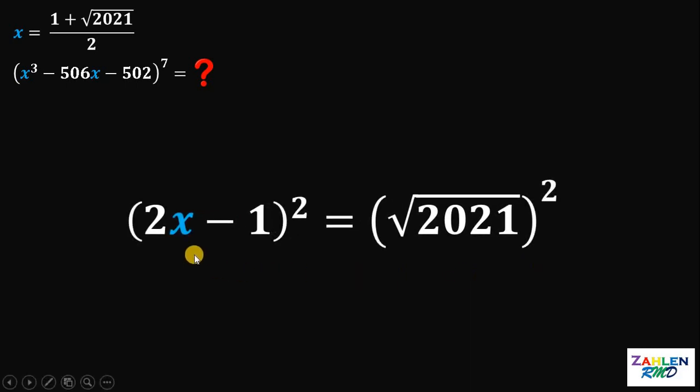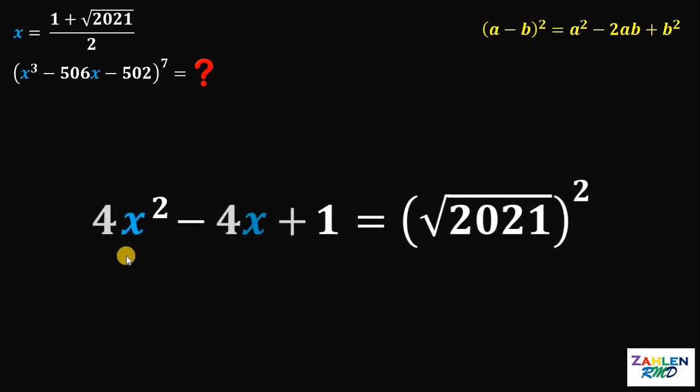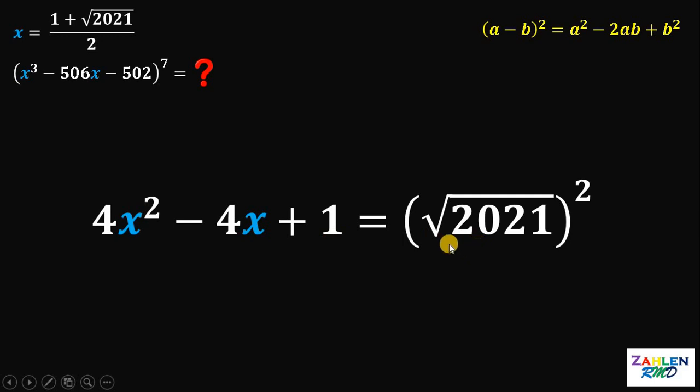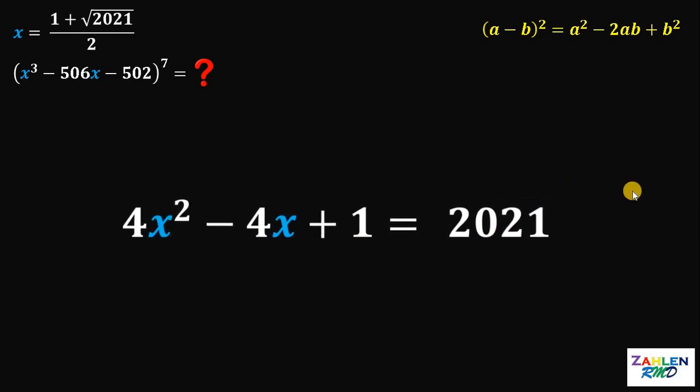Now, on the left-hand side, we will use some identity. If we have a minus b quantity squared, it is equivalent to a squared minus 2ab plus b squared. Therefore, the left-hand side of our equation becomes 4x squared minus 4x plus 1. And on the right-hand side, square root of 2021 quantity squared is just 2021.